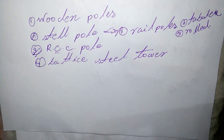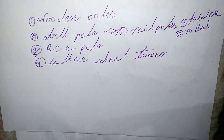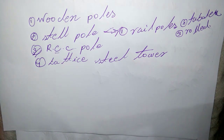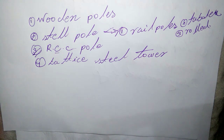Moreover, RCC poles give good outlook, and single and double circuit poles are used. The holes in the poles facilitate the climbing of poles and at the same time reduce the weight. The main difficulty with these poles is their high cost, transport challenges, and heavy weight.